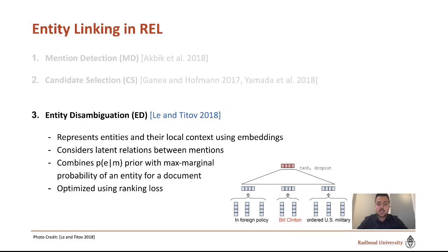As a final step, we perform entity disambiguation, based on an approach by Lee and Titov in 2018. We represent entities and their local context using embeddings, then combine PEM priors with the max marginal probability of an entity for a document, feed that to a linear layer to obtain linear activations for each entity-mention combination. This model can then be optimized using a ranking loss.